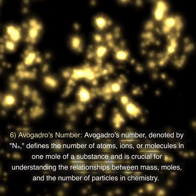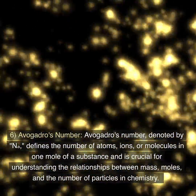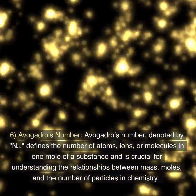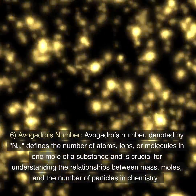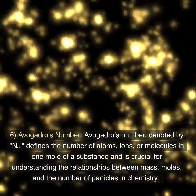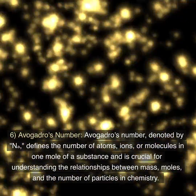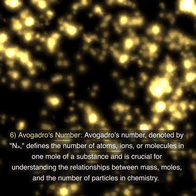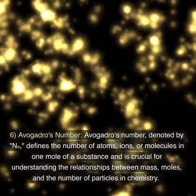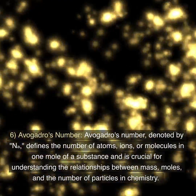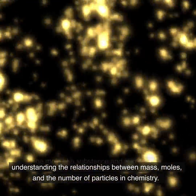6. Avogadro's number. Avogadro's number, denoted by N, defines the number of atoms, ions, or molecules in one mole of a substance and is crucial for understanding the relationships between mass, moles, and the number of particles in chemistry.